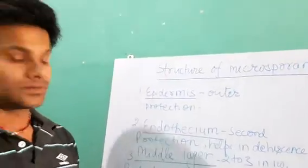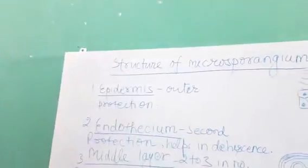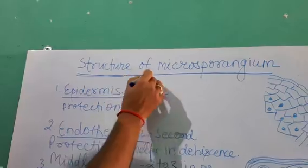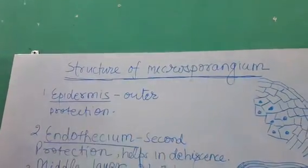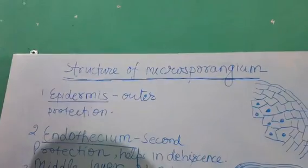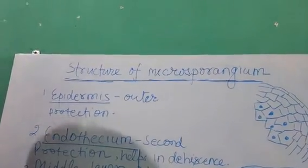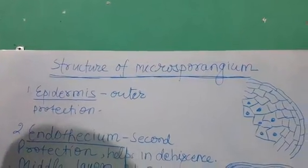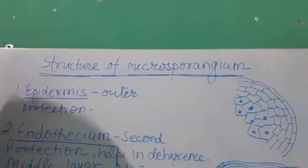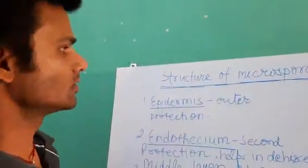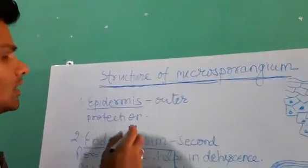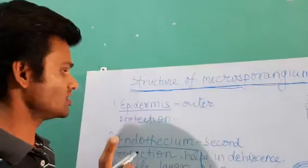Now the next point is the structure of the microsporangium. Inside the anther there are microsporangia present in four numbers. That is why we look at the structure of each microsporangium.